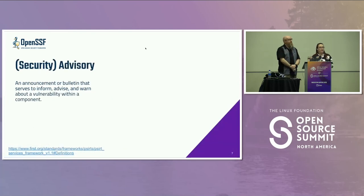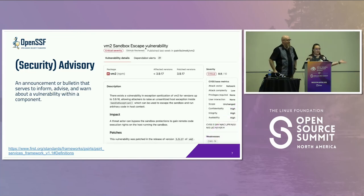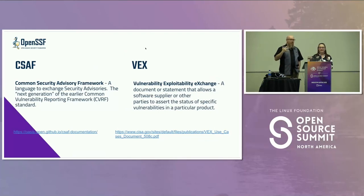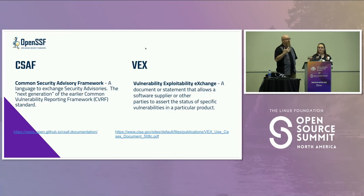The end result of a coordinated vulnerability disclosure process could be something like a security advisory — an announcement or bulletin that serves to inform the general public. This is one of the most popular ways to disclose vulnerabilities publicly. CSAF, the Common Security Advisory Framework, is how most vendors are working towards publishing advisories. It's an electronic form that evolved from an older standard called CVRF, the Common Vulnerability Reporting Framework. Most vendors, corporations, and governments will steer towards releasing via CSAF.